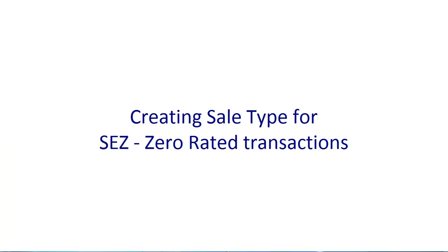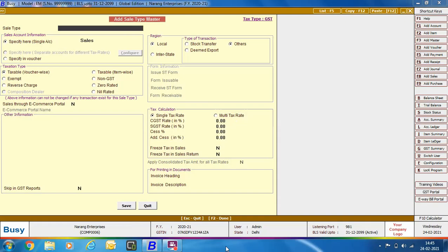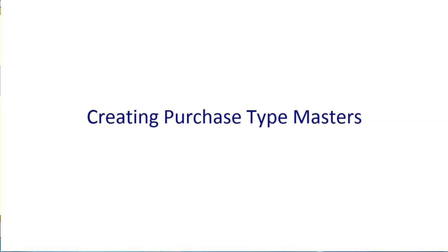Next, we are discussing creating Sale Type for SEZ Zero Rated Transaction. SEZ Transactions and Export Transactions are similar — both are Zero Rated, so you are not required to charge any tax, but if you have paid the tax, you can claim the full amount from the government. We discussed Export Taxable; on the same configuration you can make the SEZ Taxable Sale Type. For SEZ Zero Rated, we give the Sale Type name as SEZ Zero Rated, Taxation Type as Zero Rated, Region as Interstate SEZ Unit, then click Save.